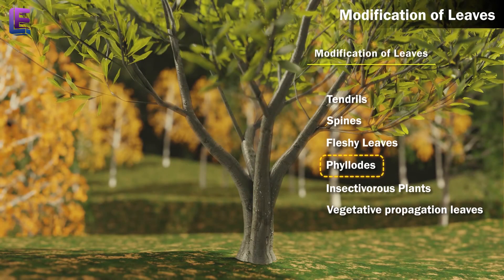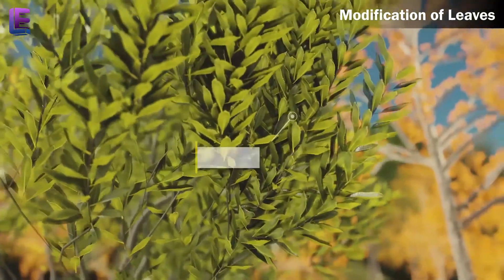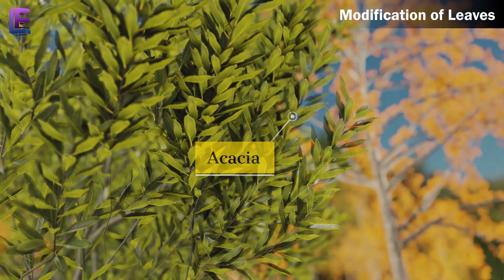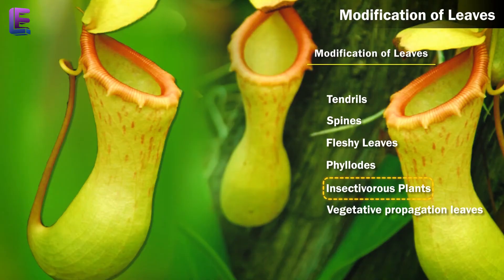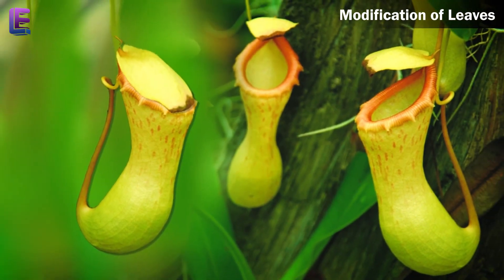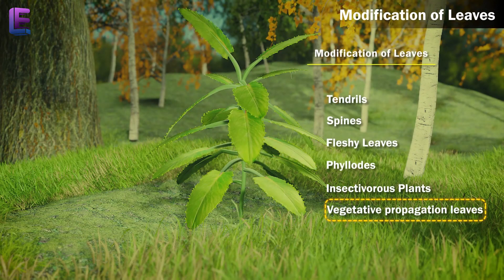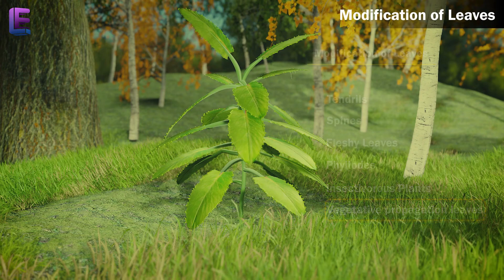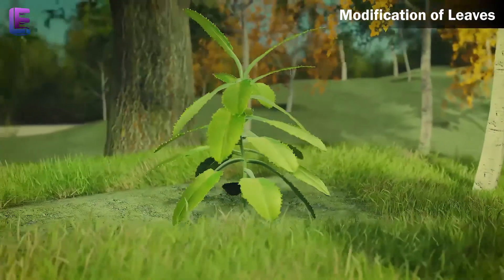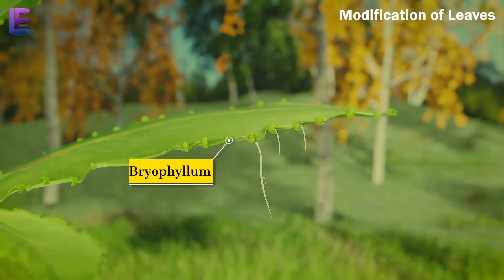4. Phyllodes: The petiole turns green and produces food. Example, Acacia. 5. Insectivorous plants: In some plants, leaves form pitchers to trap insects. 6. Vegetative propagation leaves: Buds form at the edges of leaves. They get separated and form adventitious roots. Example, Bryophyllum.